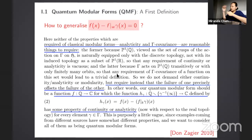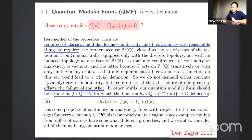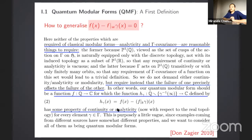So how do we generalize this zero modular difference? Quoting the 2010 paper by Zagier defining quantum modular forms: neither analyticity nor gamma-covariance are reasonable requirements on the rationals — the first because we only have a discrete topology, the second because SL(2,Z) acts transitively, leading to a trivial definition. Instead, he required that the failure of one precisely offsets the failure of the other: a function on the rationals where the failure of modular invariance, captured by an h-function, has continuity and analyticity properties.